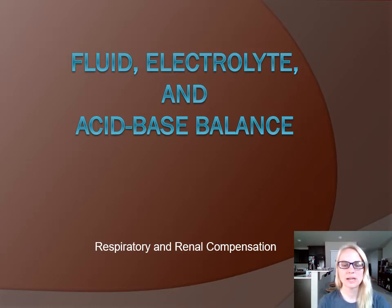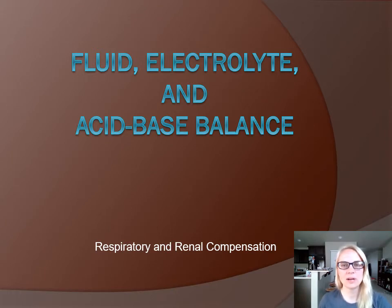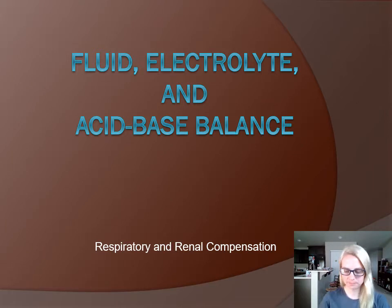We're going to take a look at what the respiratory system can do in a pH imbalance, and then we'll take a look at what the kidneys — that's our renal compensation — can do. And then we'll have one more video summarizing the imbalances and how your body deals with respiratory acidosis and alkalosis and metabolic acidosis and alkalosis.